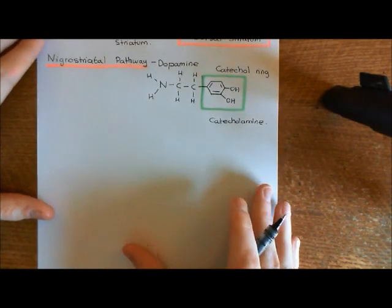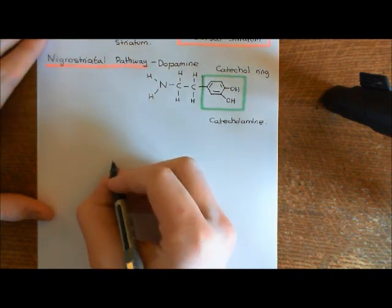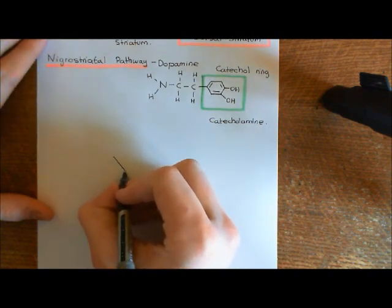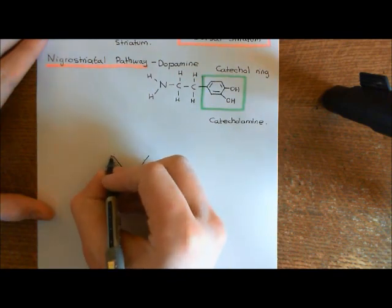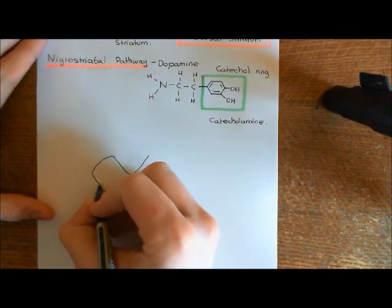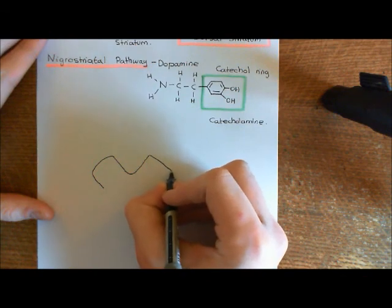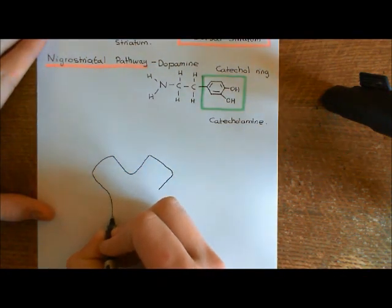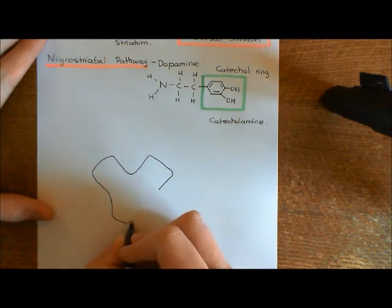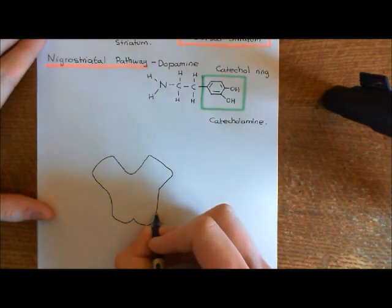Firstly, let's show the midbrain. I'll leave a lot of space because we're going to need structures in front. Here are the two cerebral peduncles of the midbrain — the left cerebral peduncle and the right cerebral peduncle. And then at the back we're going to have the superior colliculi — the left and right superior colliculus.